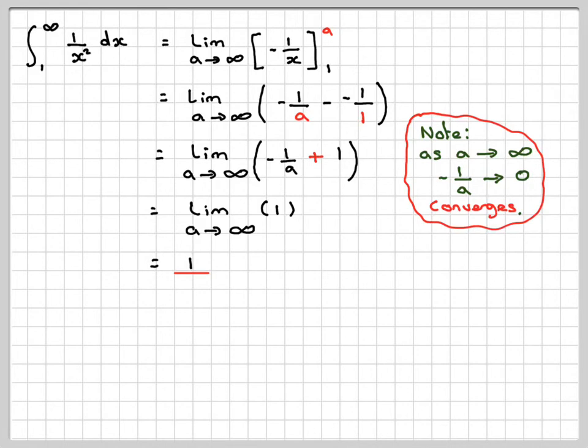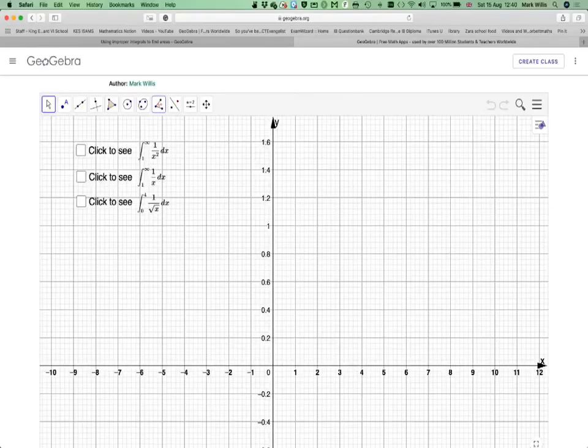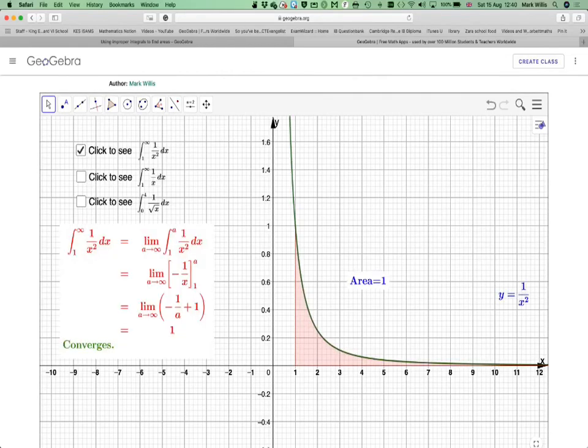Now I've got this GeoGebra applet which I'll put in the notes of the video. It's actually got three examples from the three videos I'm going to do on this. So there we can see the required area, our function y equals 1 over x squared, area of 1, and there again is the solution. It's an example of where it converges.